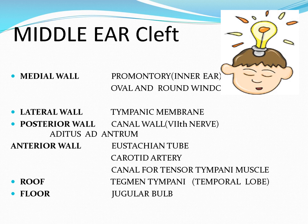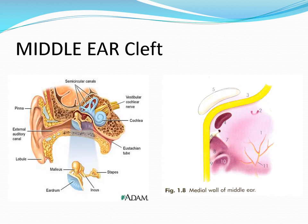Infection can spread into the intracranial cavity, involve the sigmoid sinus, or involve the jugular bulb. The middle ear contains ossicles, and the Eustachian tube connects it to the nasopharynx. There is bone between the cranial cavity and middle ear. Posteriorly the sigmoid sinus is present, and the facial nerve courses through the medial wall, passing between the lateral semicircular canal and oval window. Dehiscence of the fallopian canal containing the facial nerve can lead to facial nerve injury.